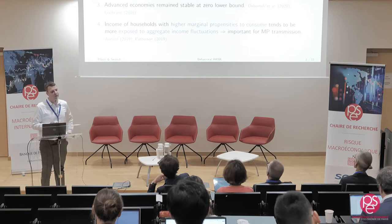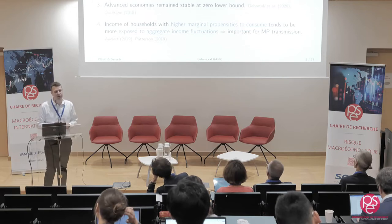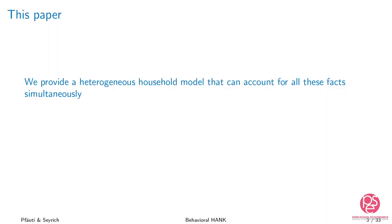What we have also observed over the last two decades is that many advanced economies have been stuck at the zero or effective lower bound on nominal interest rates, but we did not see any large instabilities arise because of that. And households with high marginal propensities to consume tend to be more exposed to aggregate income fluctuations, which matters a lot for the monetary policy transmission mechanism.